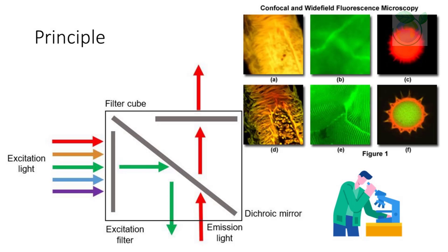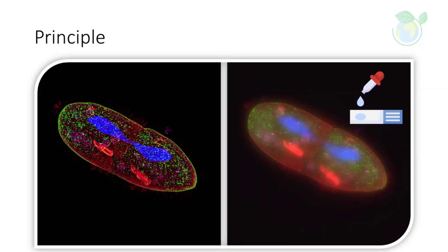In contrast, a confocal microscope uses point illumination and a pinhole in an optically conjugate plane in front of the detector to eliminate out-of-focus signal. The name confocal stems from this configuration. As only light produced by fluorescence very close to the focal plane can be detected, the image's optical resolution, particularly in the sample depth direction, is much better than that of wide-field microscopes.